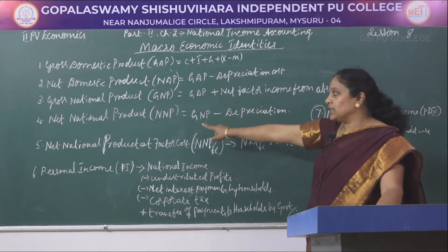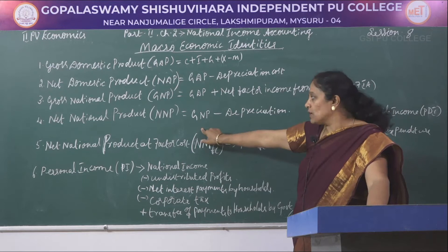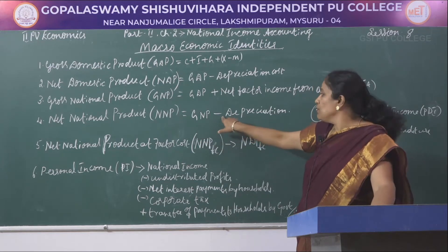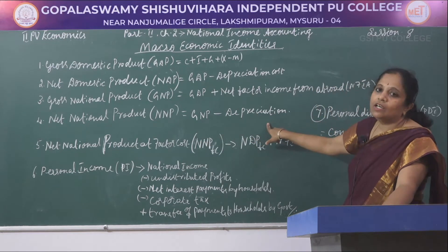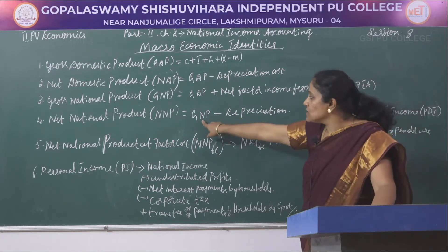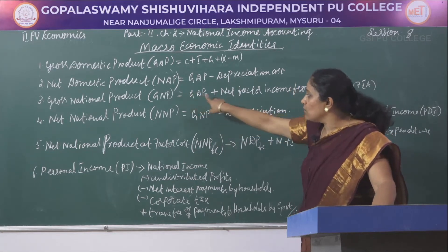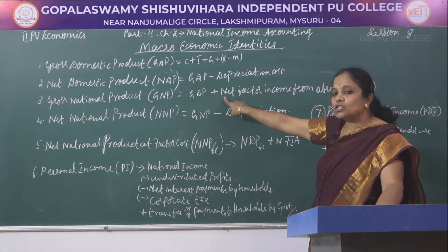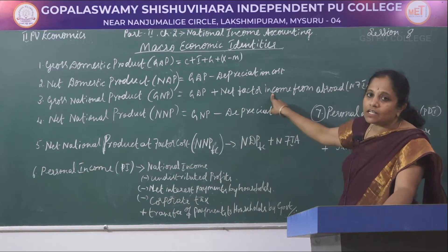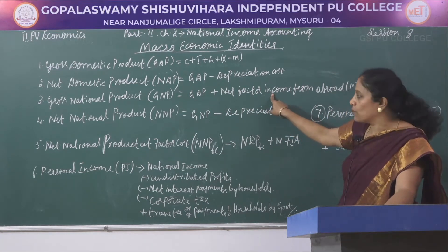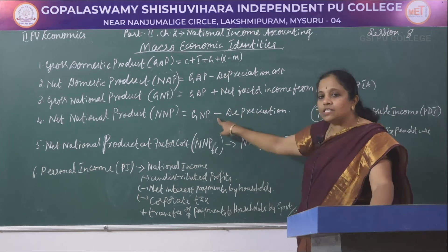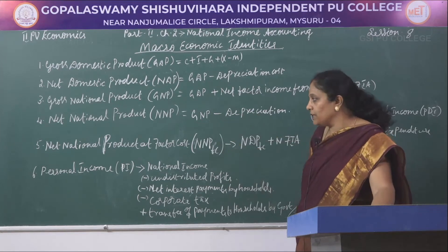The fourth identity is net national product, which is GNP minus depreciation. The gross national product derived from GDP plus net factor income from abroad is taken, and then depreciation is deducted from it.